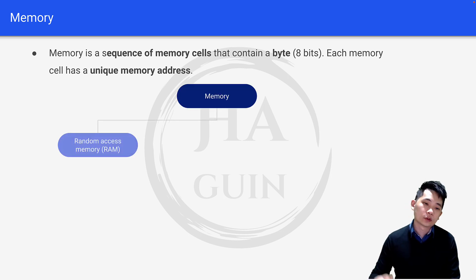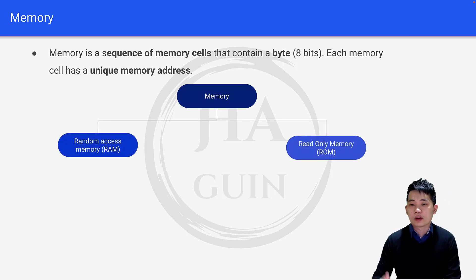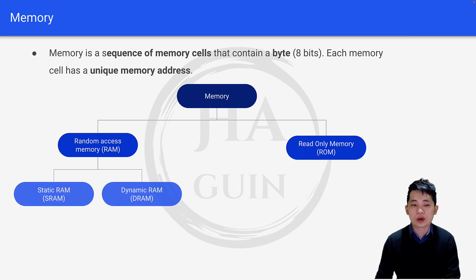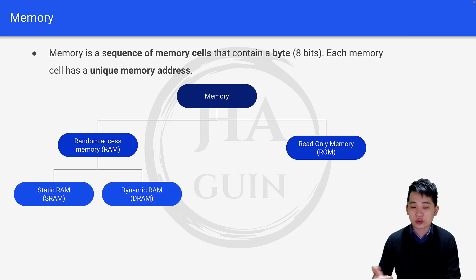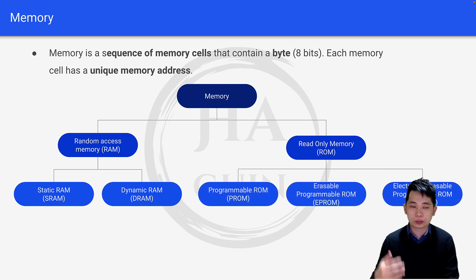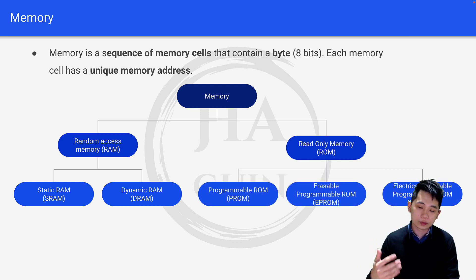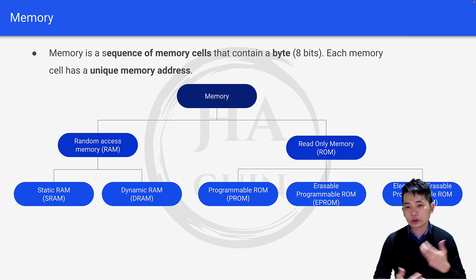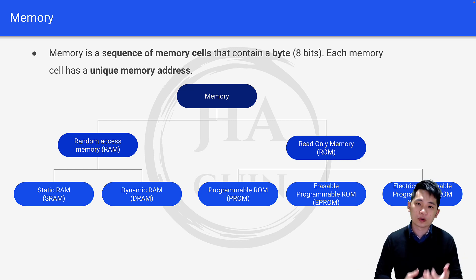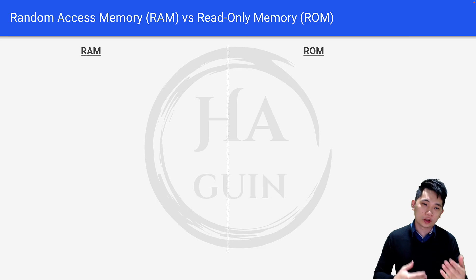So let's look at types of memory. First of all we have Random Access Memory which is RAM, and then we have Read Only Memory which is ROM. Under RAM we have Static RAM which is SRAM and Dynamic RAM which is DRAM. Under ROM we have PROM which is Programmable ROM, then EPROM which is Erasable Programmable ROM, and EEPROM which is Electrically Erasable Programmable ROM.